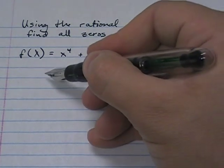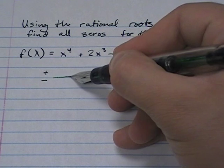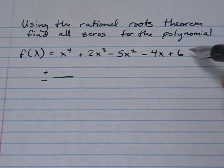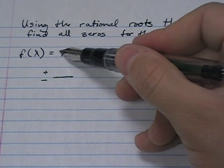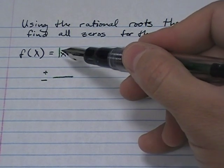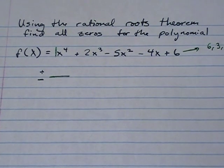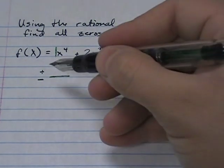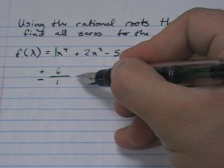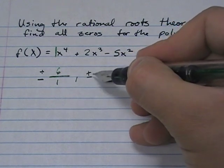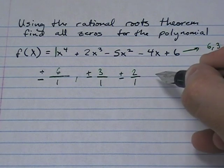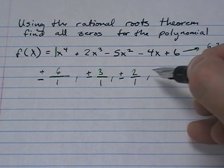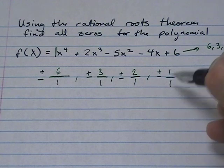The possible rational roots for this equation are going to be plus or minus the factors of six — which are six, three, two, and one — divided by the factors of the leading coefficient, which is one. So we get plus or minus six over one, plus or minus three over one, plus or minus two over one, and plus or minus one over one.